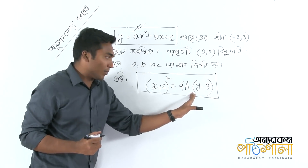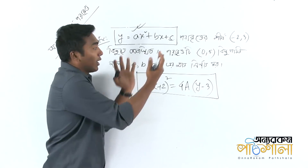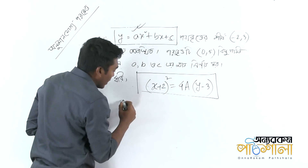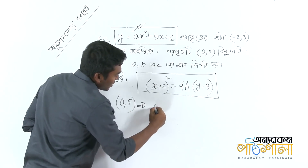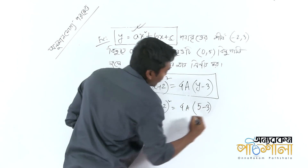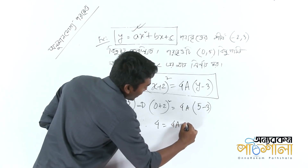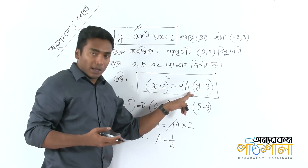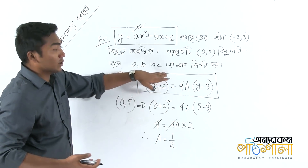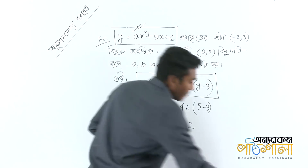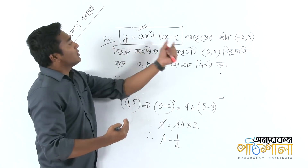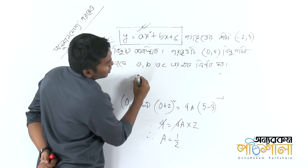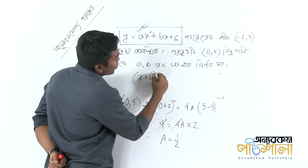We know that this one is the answer. The answer is 0.5a. If you return to 0.5a, we will give 0 plus 2 whole square, 4 into A, 5 minus 3. We will give 4 and 2 of A. 1 is a half. If we have a half, the answer will be the first half. We call half A — that looks like x plus 2 whole square is equal to 4 into A, y minus 3.